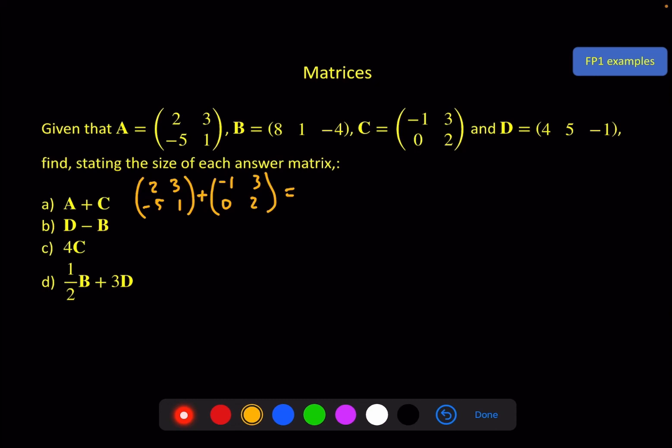So first row, first column element, plus first row, first column element, and that's 2 plus minus 1, gives me a 1 in the first row, first column element. And then you do the same for all the others. 3 plus 3 here is 6, minus 5 plus 0, and 1 plus 2.